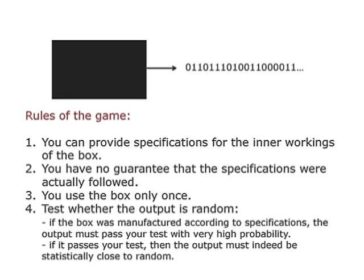Let me spell out the rules of the game more carefully. You're allowed to say what should be in this black box — you can specify exactly what goes into it — except that the person who made this black box may not listen to you. So what's inside is either what you said or something completely different. You use the box only once and test the output. The two conditions are: if the box was manufactured according to your specifications, the output should pass your test with very high probability; and if the output passes your test, it should be statistically close to random no matter what's in the box.